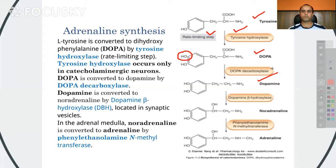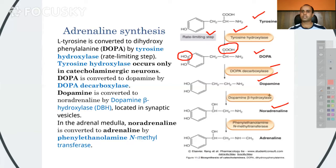The second step is the conversion of DOPA into dopamine. In this conversion, the enzyme DOPA decarboxylase is used. Because it is a decarboxylase enzyme, it removes the COOH group that was present in DOPA and replaces it with H. So in the case of dopamine, there is no COOH group due to the action of the decarboxylase enzyme.